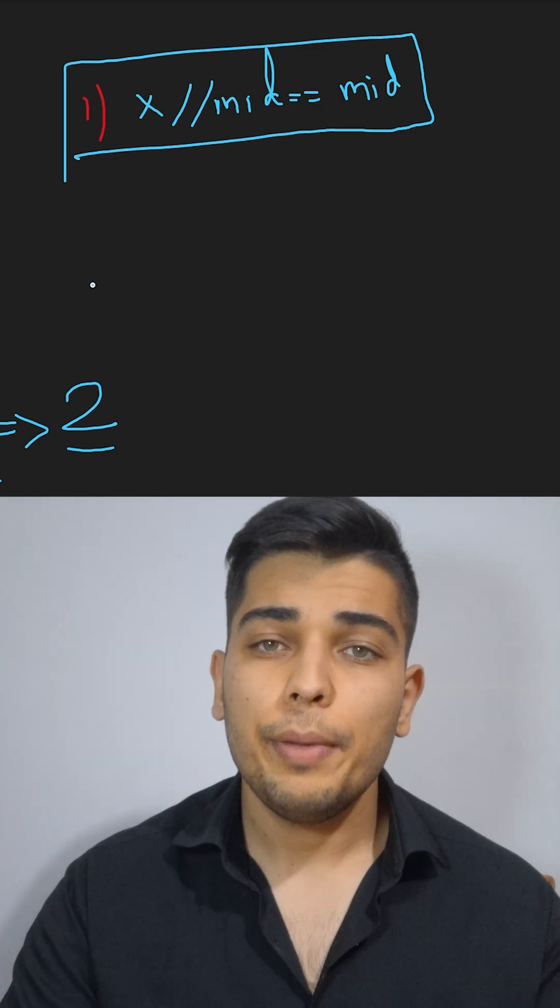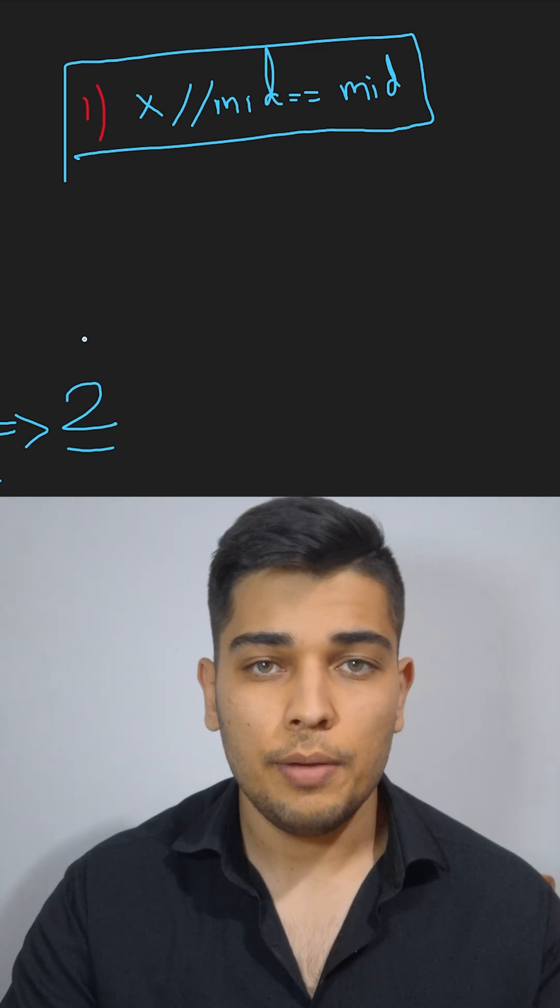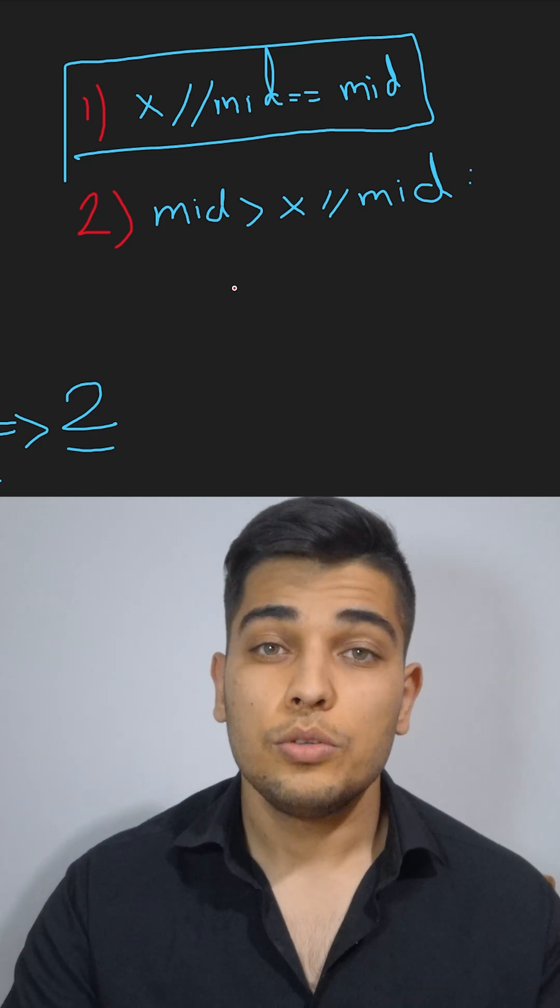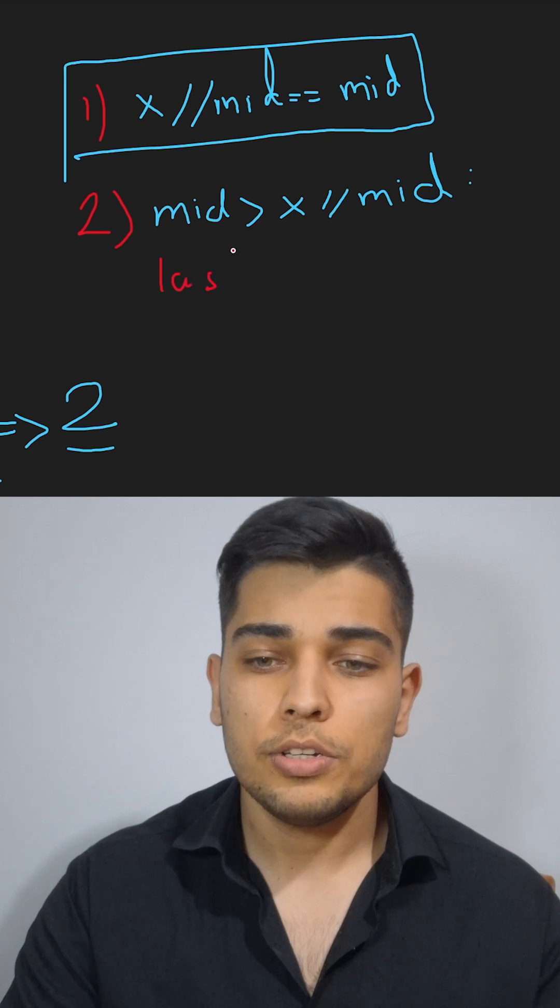Second option is that mid is greater than x divided by mid. So in this case, we're going to change the last pointer's position to mid minus 1.